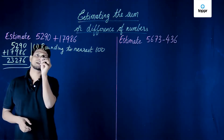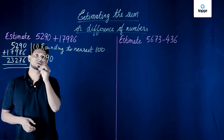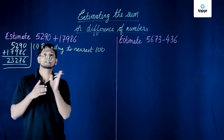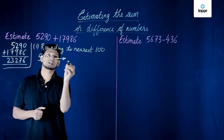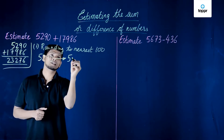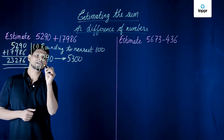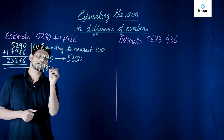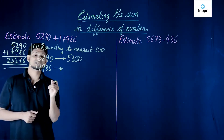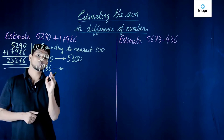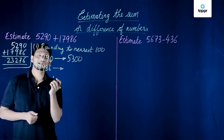In this case, we will take an example where we round off to the nearest hundred. So 5290, rounded to the nearest hundred, becomes 5300. And 17986, rounded to the nearest hundred, goes toward the thousand side and becomes 18,000.